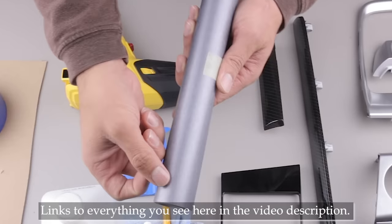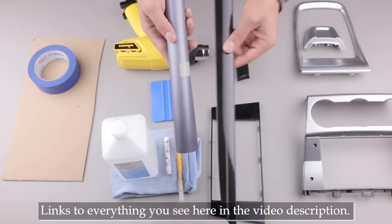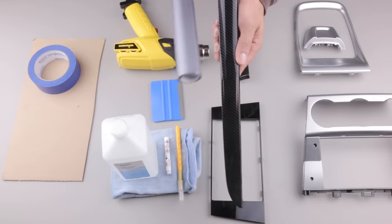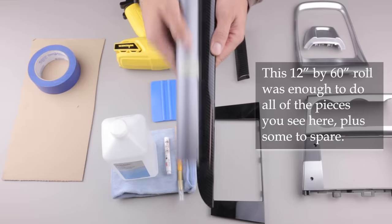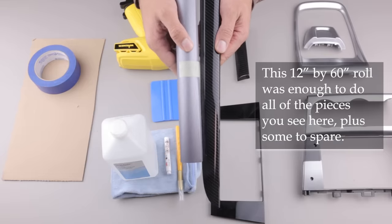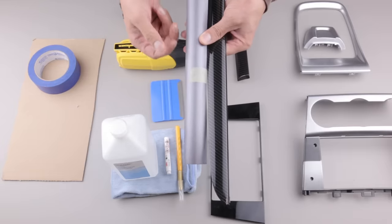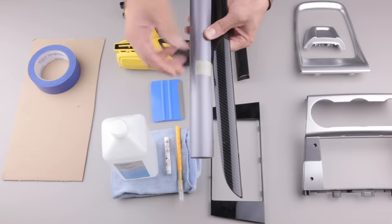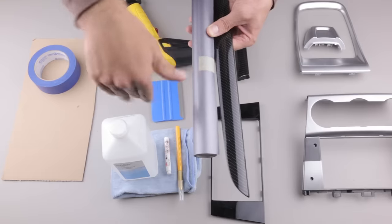This brushed steel vinyl has brush strokes running vertically on the vinyl itself and that's important because if you're wrapping a long piece like this and you want the brush strokes to run horizontally on the piece then this is not going to reach because it's not long enough. So you have to either get a piece of vinyl wide enough to cover the longest piece that you want to wrap or you have to get a piece of vinyl that has the brush strokes running in the direction that you wanted. In this case it would be horizontally.